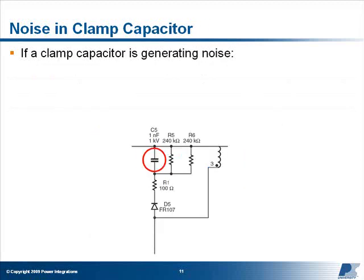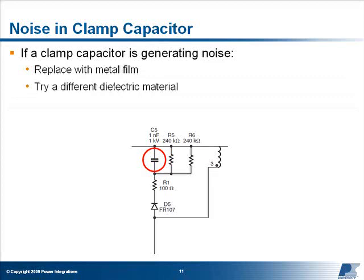If a clamp capacitor is generating noise, consider either replacing it permanently with a metal film type, try a ceramic capacitor with a different dielectric material, or change the clamp type. For example, switch to a zener clamp circuit.